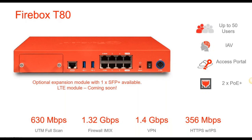The Firebox T80 supports up to 50 users and also supports intelligent antivirus and access portal (clientless VPN). It has two PoE+ ports and an optional expansion module with one SFP+ for connecting to one-gig fiber from an ISP or core switch — useful for medium-sized clients. Coming soon is support for an LTE module for extra connectivity. UTM throughput is 630 Mbps and HTTPS with IPS is 356 Mbps.